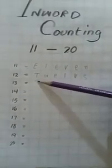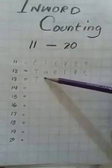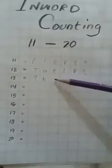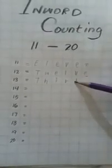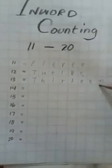Okay kids, now tell me spelling of 13. T, H, I, R, T, W, E, N. 13.